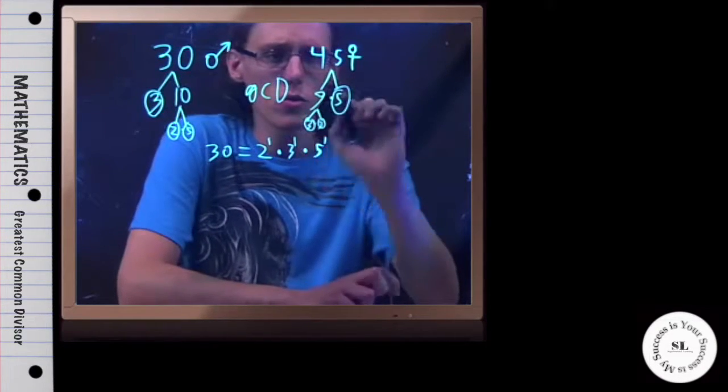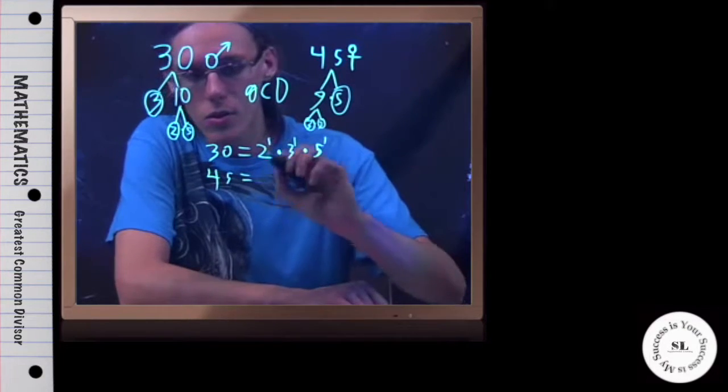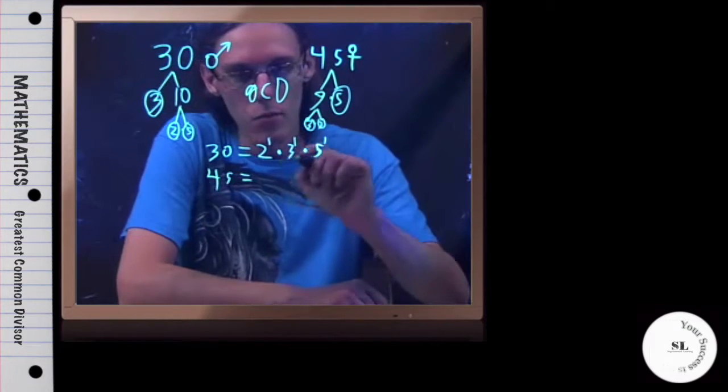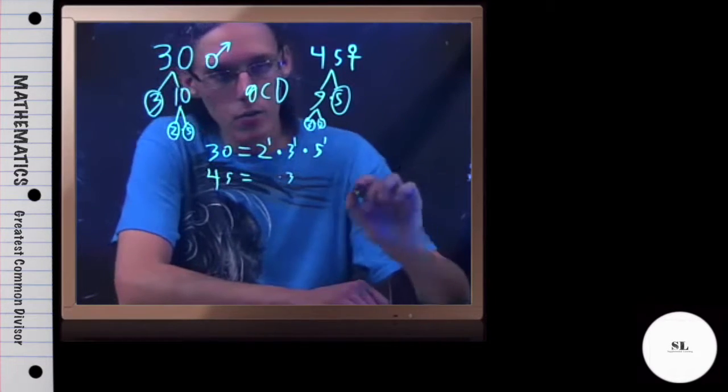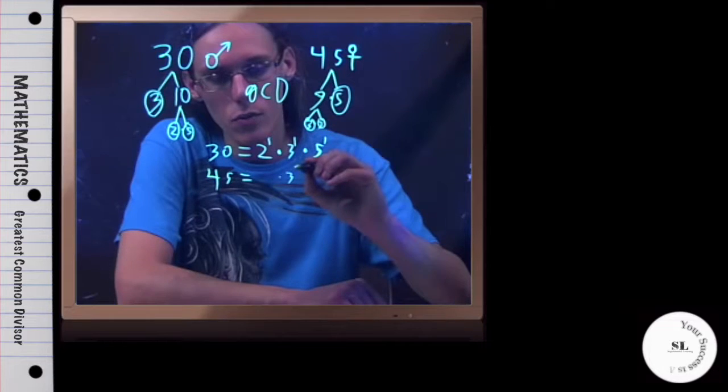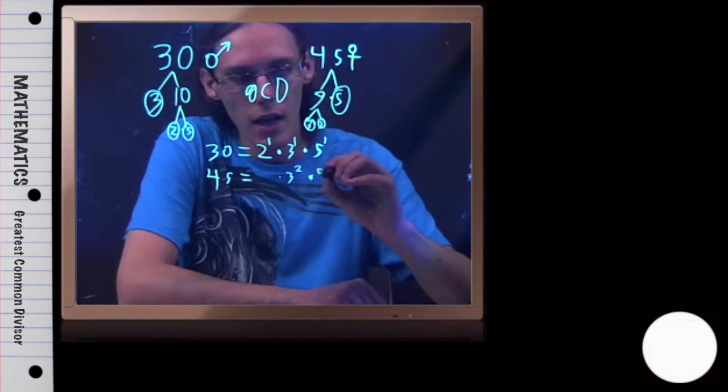Now notice, there's no 2 in this one, which is kind of interesting. So I'm going to write 45 equals, and since there's no 2, I'll just sort of ignore that and move over. I could write the 3s out, but what there are is 2 of these, right? So I could write that as 3 squared times, well, there's a single 5, so 5 to the 1.